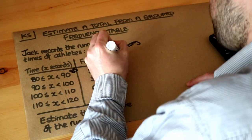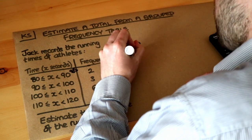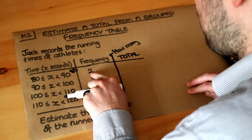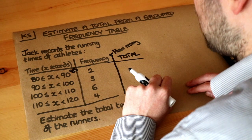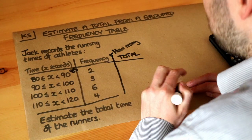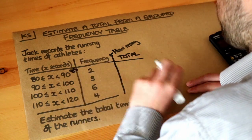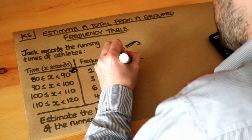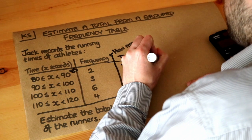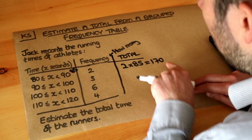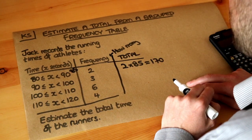Now we're going to add a total column. If we've got two athletes, each with a time of 85 seconds, what was their total time? Well, we can just do two lots of 85, so 2 times 85, which is 170 seconds. I'm not going to bother with the unit yet. I'm going to put the unit on my final answer at the end.